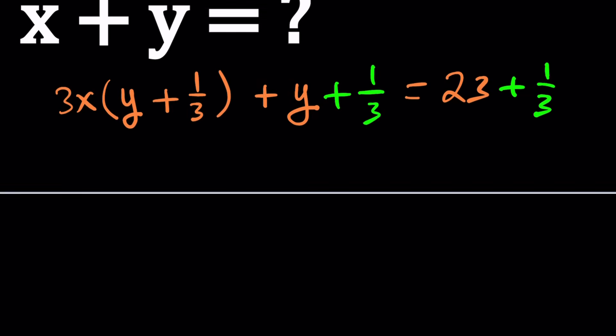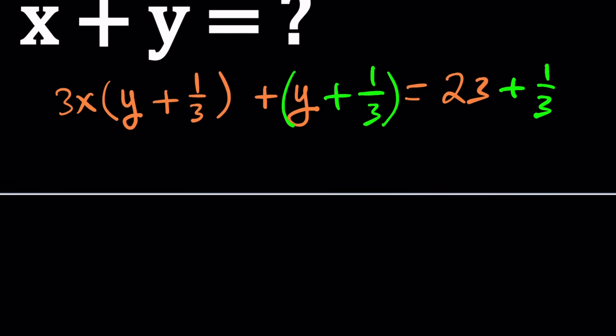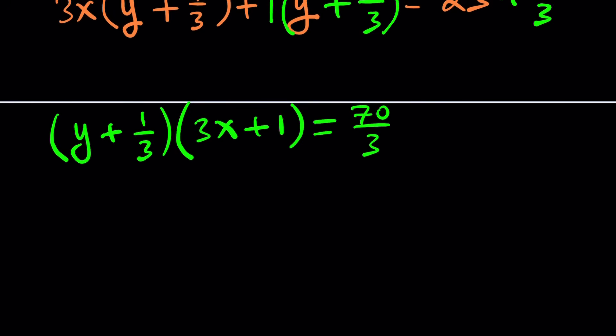But now this gives us a really good opportunity to factor it. Y plus 1 third is a common factor, preceded by a 1 here. And the other factor is 3x plus 1 equals 23 plus 1 third. If you make a common denominator, you get 70 over 3. This may look weird because we have rational numbers, but it can be easily fixed. Multiply both sides by 3 and distribute. You get 3y plus 1, multiply by 3x plus 1, and these 3s cancel out.